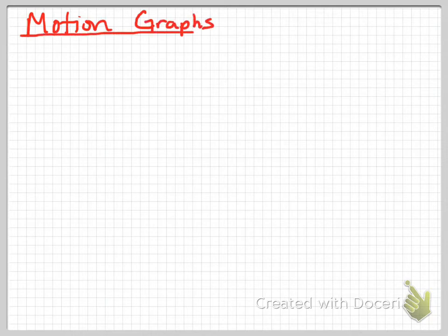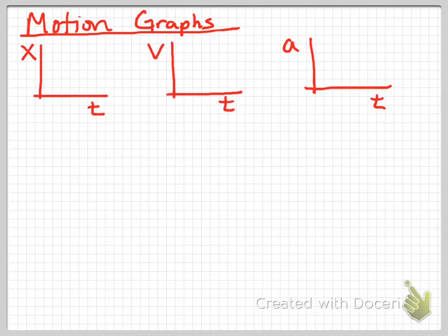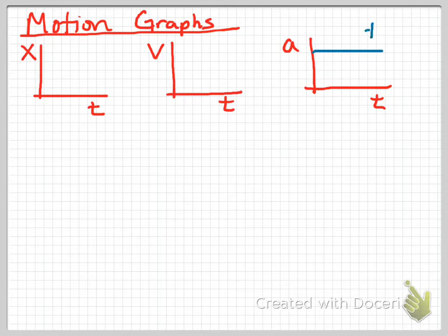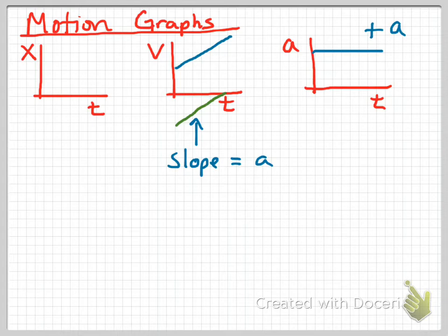Now we're going to move on to motion graphs. The types of graphs we're going to look at are position versus time, velocity versus time, and acceleration versus time. Being in AP Physics C, we are going to deal with acceleration that changes over time — something you did not deal with in AP Physics 1. We'll start by looking at some basic graph shapes, beginning with positive acceleration, which represents the slope of a velocity versus time graph.